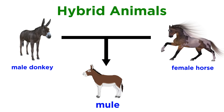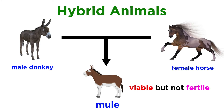There are many common hybrid animals, such as the mule, which is the offspring of a male donkey and female horse, so hybrids can be viable. However, mules are not fertile, but rather sterile, so this type of gene flow cannot occur.